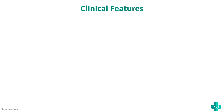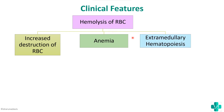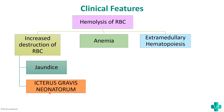The clinical features stem from the basic problem of RBC hemolysis. Increased destruction of RBCs leads to anemia, and the body compensates by stimulating extramedullary hematopoiesis. The increased destruction also causes jaundice, known as icterus gravis neonatorum — meaning the baby may be born with jaundice even before 24 hours of age.